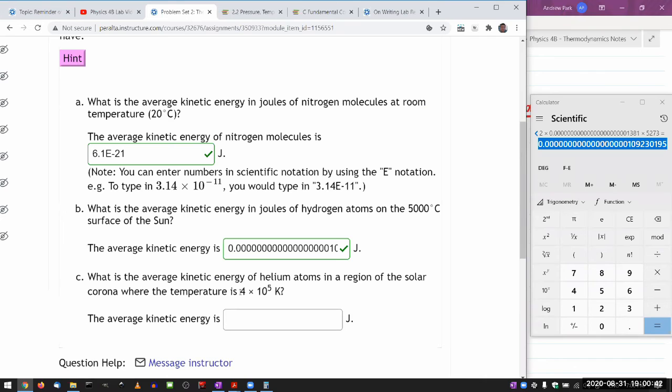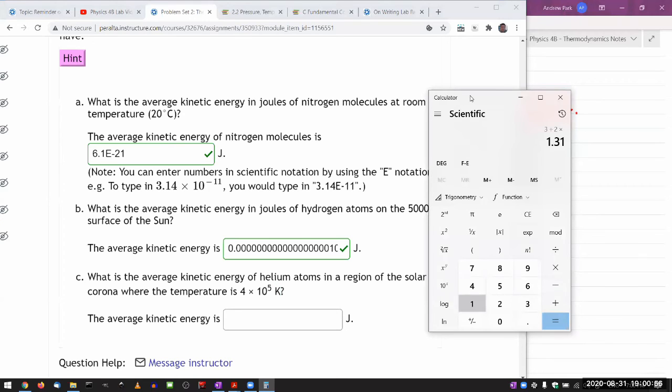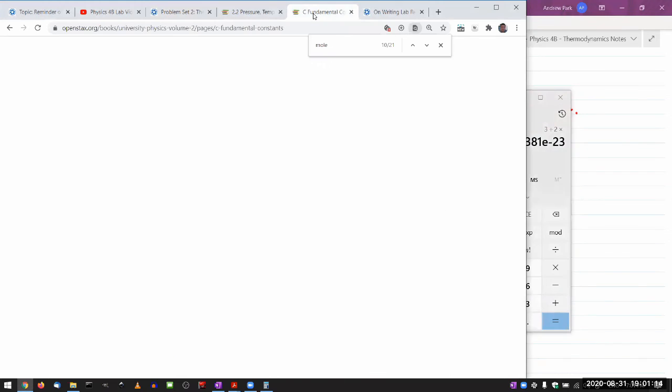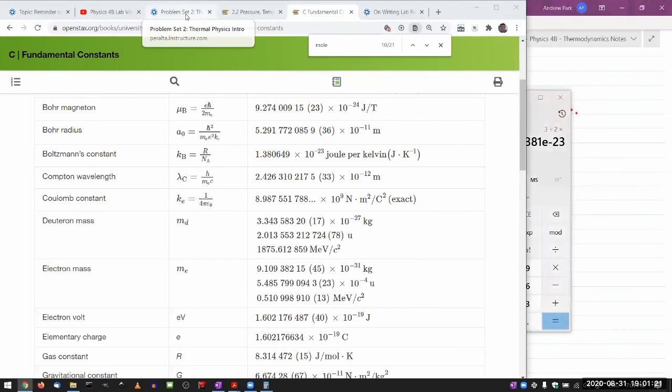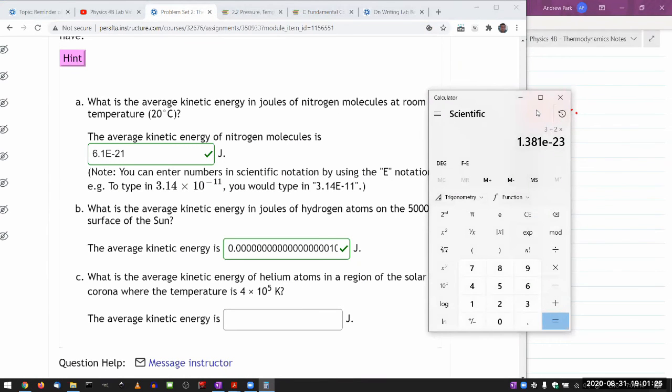And so, 400,000 Kelvin. I think at that point, it's now high enough that I can neglect the 273 Kelvin. And that's also given in Kelvin already, so I don't have to add anything. For that, it's going to be 3 halves times 1.381 times 10 to the power of minus 23 times 4 times 10 to the power of 5. I'll just do copy and paste.